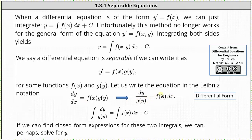Algebraically, it appears as if we divided both sides by g of y, which is fine, but it also appears as if we multiplied both sides by dx, which algebraically works, but that's not really what's happening here, which we'll talk more about in just a moment. Once we have the y parts on the left and the x parts on the right, we integrate both sides of the equation, which gives us the integral of one divided by g of y dy equals the integral of f of x dx plus c.